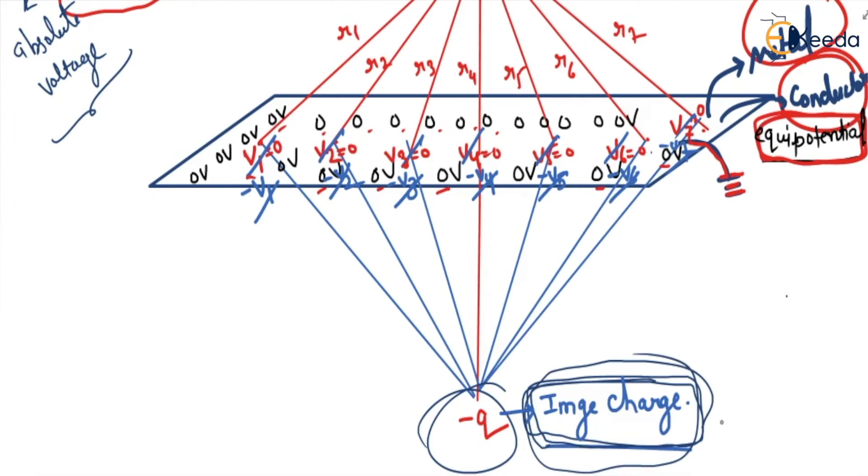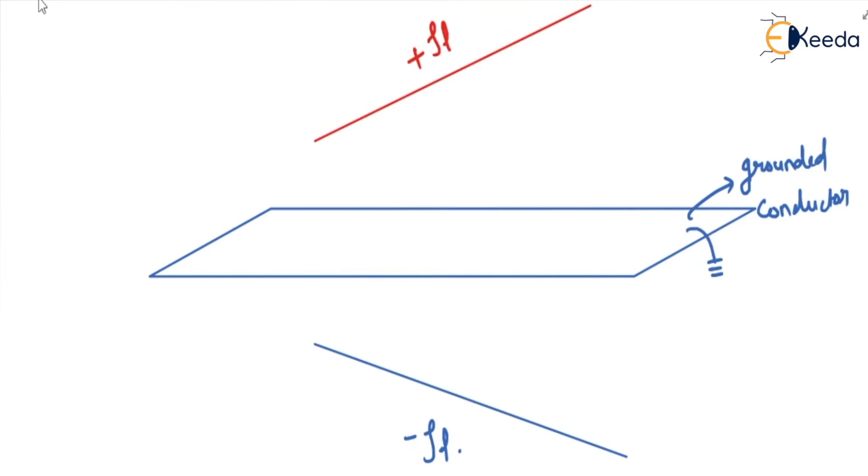Similarly, please see this image. So here is grounded conductor, here is plus rho l which is line charge. So the image of this charge is minus rho l.